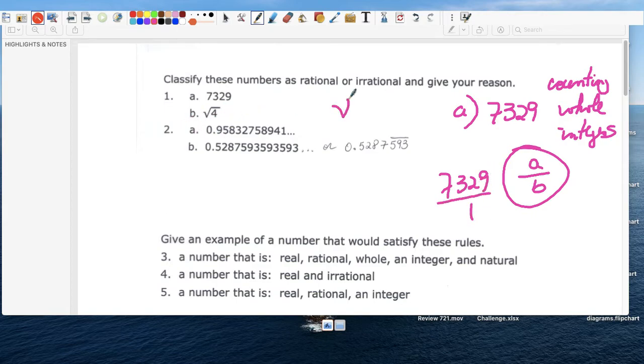b, square root of 4 is 2. Likewise, 2 is counting, whole, integer, rational, and 2 can also be written like that.